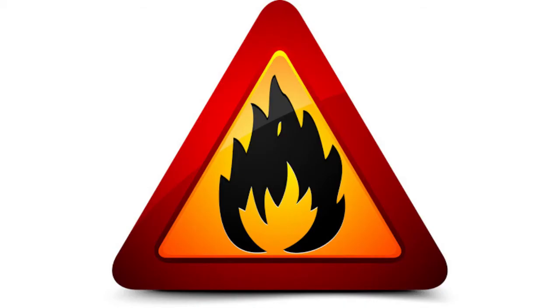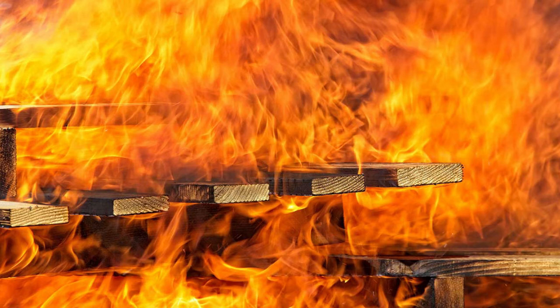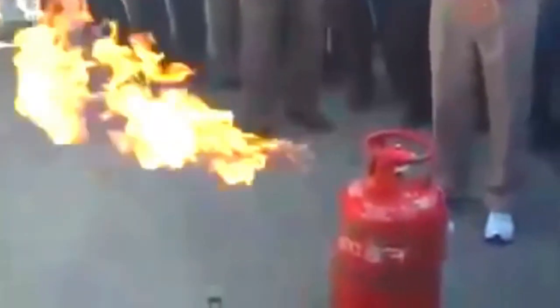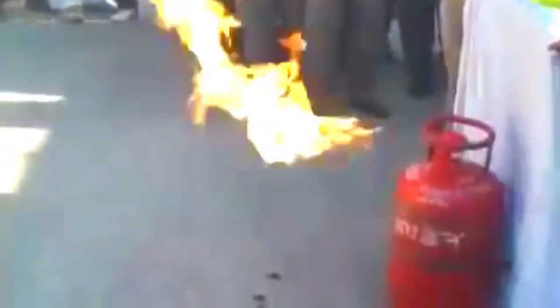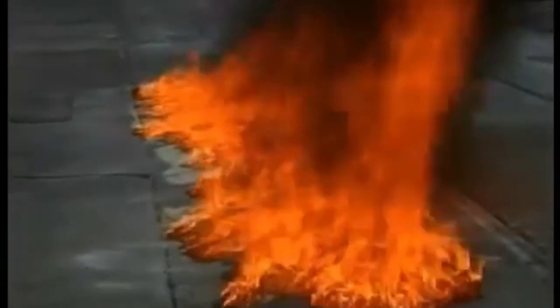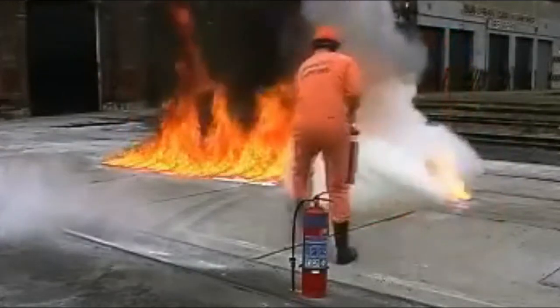Let's know what measures we should take when different objects catch fire. If solid materials like wood or coal are on fire, put water directly on them. If gas catches fire, a jute sack can be used to cover it to extinguish the fire. But if liquid substances like petrol or oil catch fire, the air supply should be cut off and a foam-type fire extinguisher should be used.